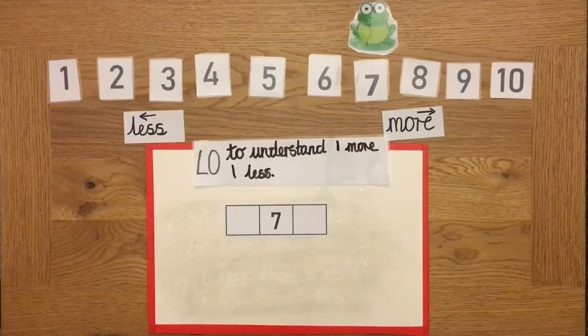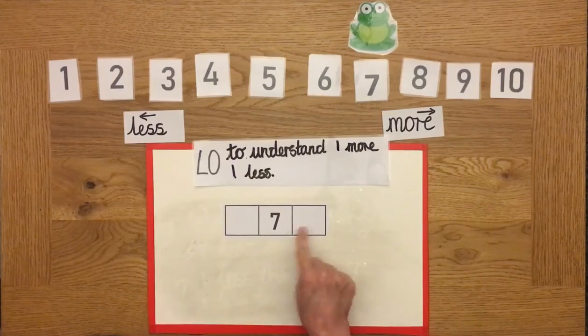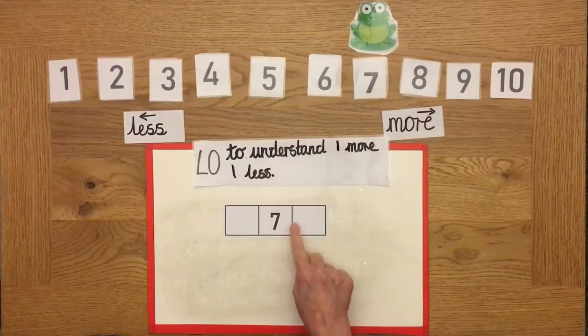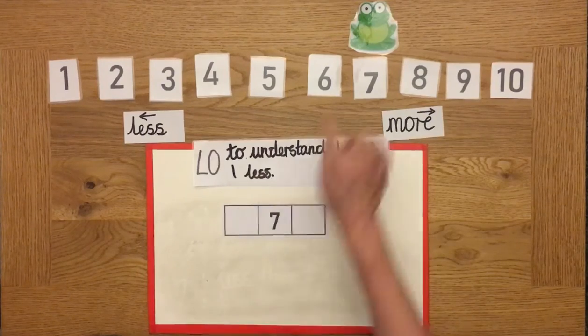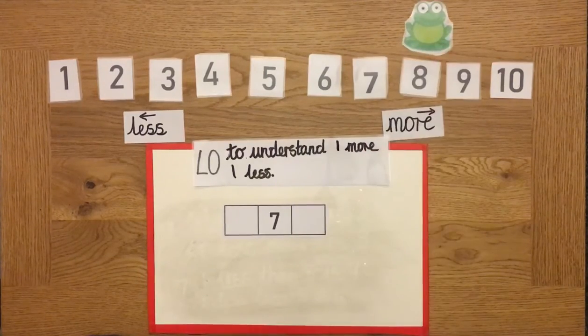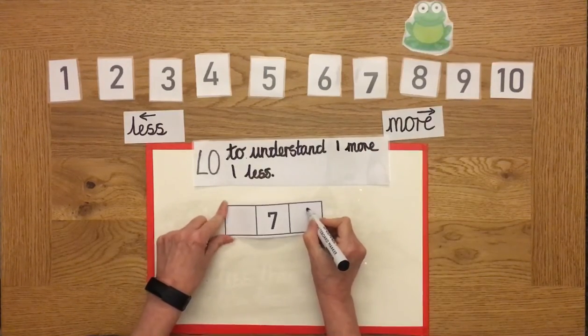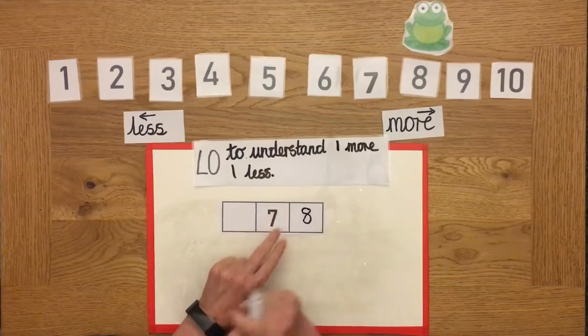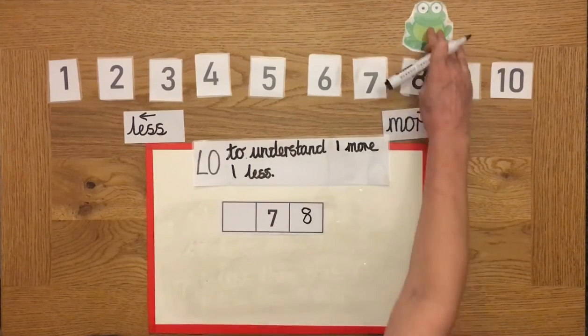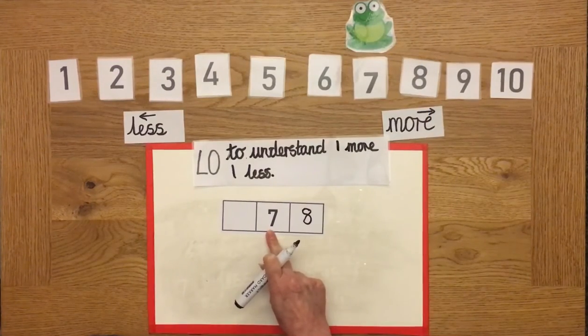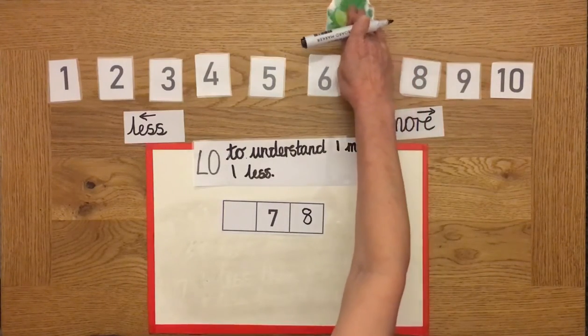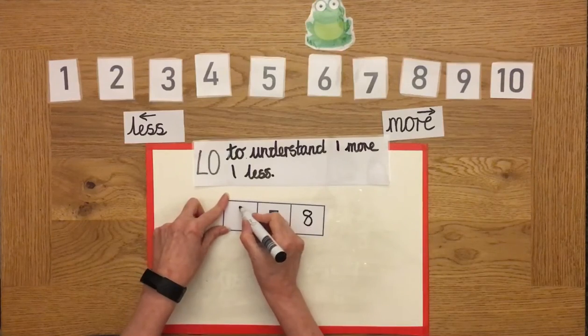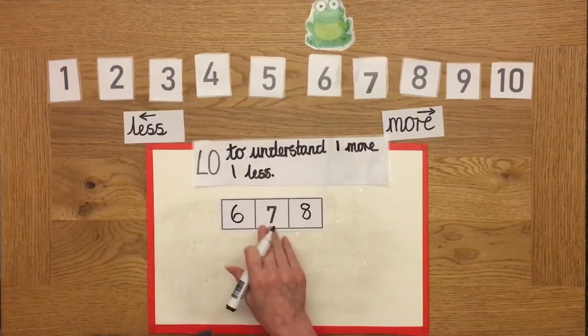So we need to work out what goes here. So what is one more than seven? Check. Fantastic. Good thinking, everybody. So I'm going back to seven again, because that's where we're starting in the middle. What's one less? Going this way. Brilliant. It's six.